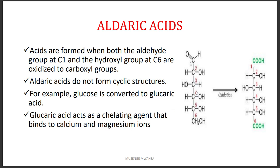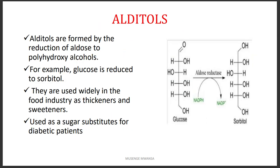If we oxidize carbon number one and carbon number six of glucose, we form glucaric acid. Glucaric acid is important as a chelating agent — it binds to metal ions. When these chelating agents bind to metal ions, they are able to remove metals from the body.